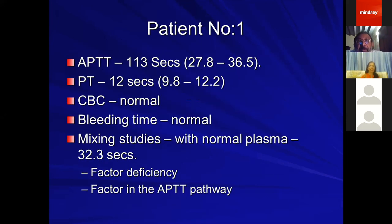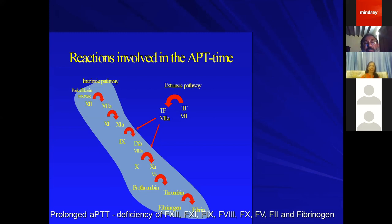Coming back to the patient with an APTT of 113 seconds: prothrombin time was normal, platelet count and bleeding time were normal. Mixing studies with normal plasma showed complete correction of the prolonged APTT to 32.3 seconds, indicating a factor deficiency. Since PT was normal, we looked at the intrinsic pathway factors — factor 12, 11, 9, and 8. Assaying all intrinsic pathway factors revealed factor 8 was 283% (normal 50–150%), factor 9 was 175%, factor 12 was 75%, but factor 11 was absent — less than 1% — a severe deficiency of factor 11.